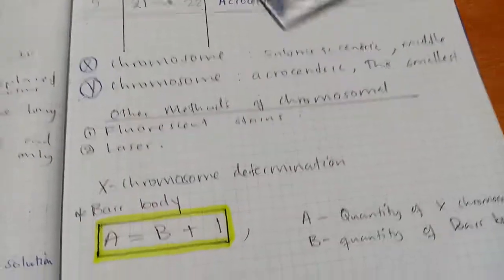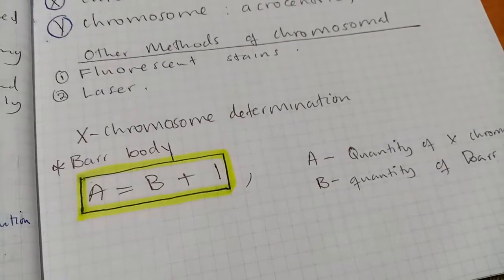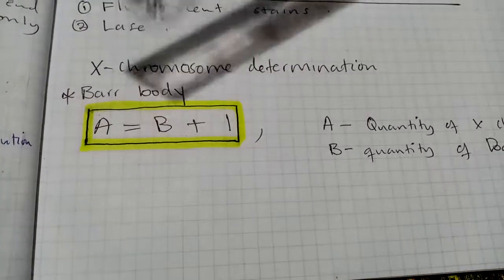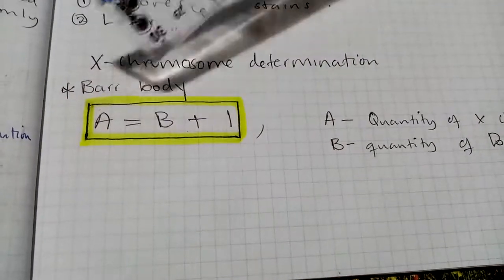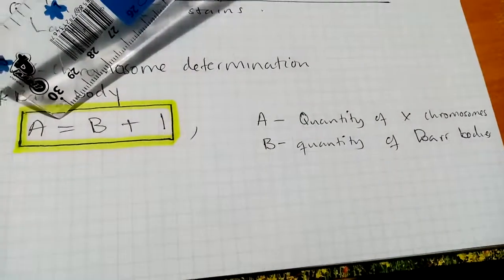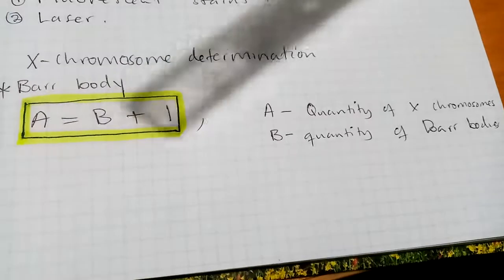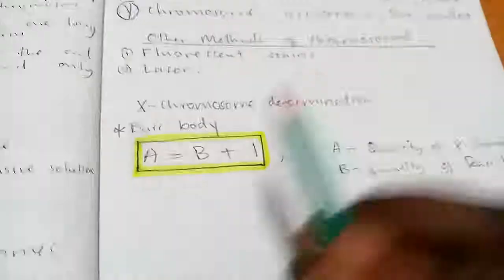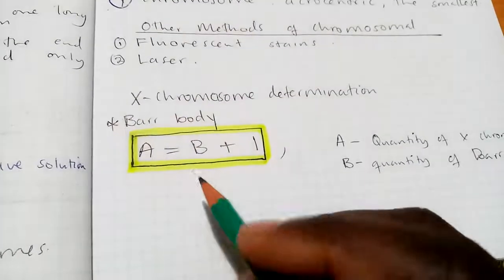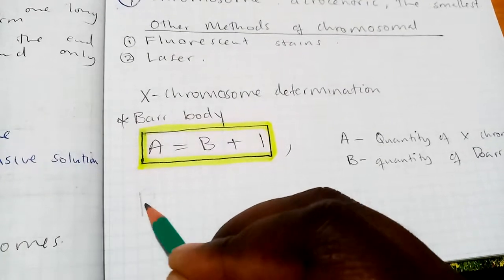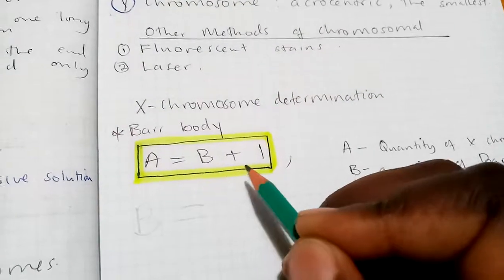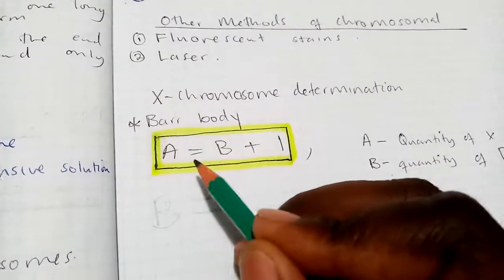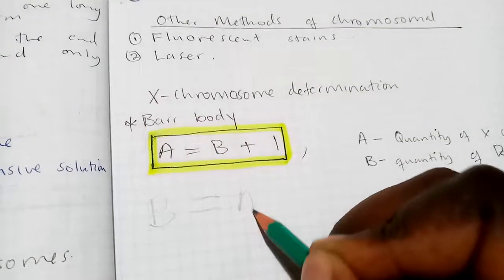Let's look at the determination of the X chromosome. We have a simple formula: A = B + 1, where A represents the quantity of X chromosomes and B is the number of Barr bodies. If you want to find the number of Barr bodies, rearrange the formula to: B = A − 1.